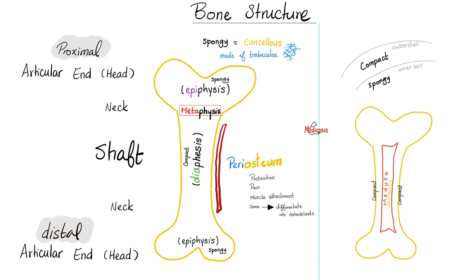The periosteum provides a site for muscle attachment, and some periosteal cells are capable of differentiating into bone cells called osteoblasts. The shaft or diaphysis is made of compact bone. The top or head — the epiphysis — is made of spongy, cancellous bone. Between the head and shaft there is the neck — the metaphysis. The part of the bone closer to the core of your body is the proximal end; the part away from the core is the distal end.